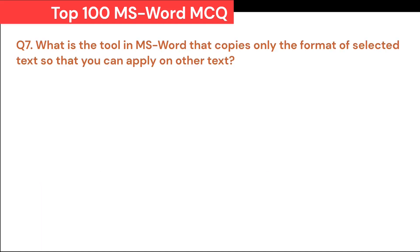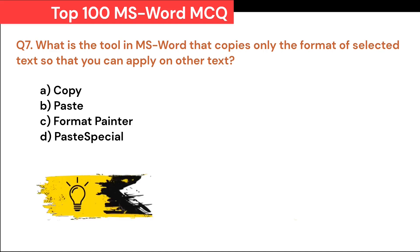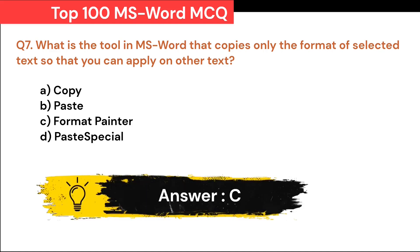What is the tool in MS Word that copies only the format of selected text so that you can apply it on other text? A. Copy. B. Paste. C. Format Painter. D. Paste Special. Correct answer is C. Format Painter.